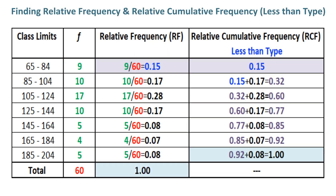Finding relative frequency and relative cumulative frequency less than type. To find relative frequency, the first frequency is divided by the total frequency. For example, the first frequency is 9, which is divided by 60 to get 0.15. In this way you find the rest of the 6 relative frequencies. Relative frequency of a class is the percentage of the frequency that falls in that class.